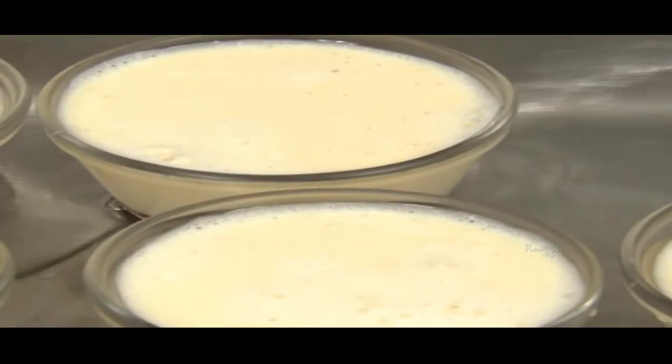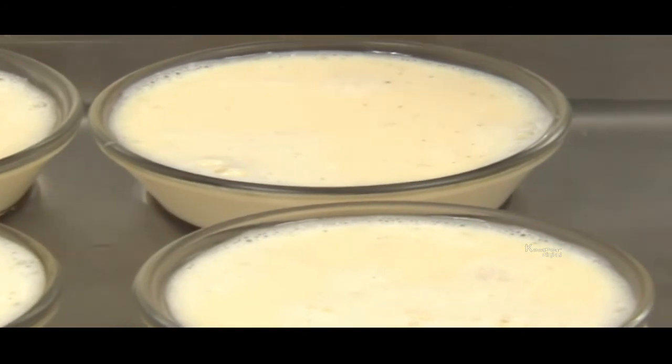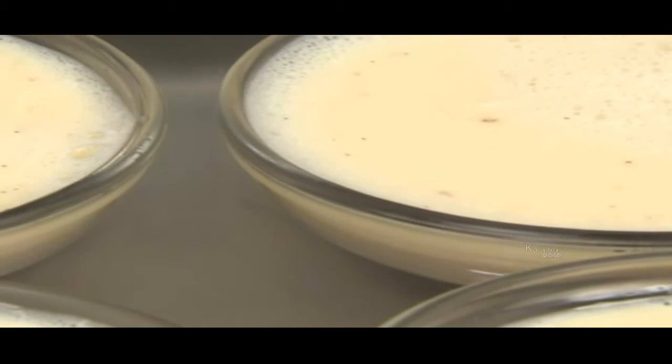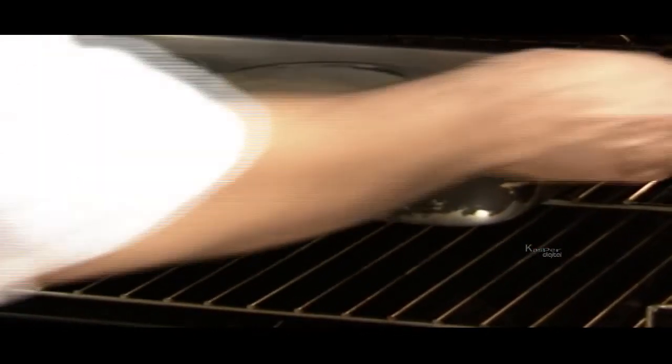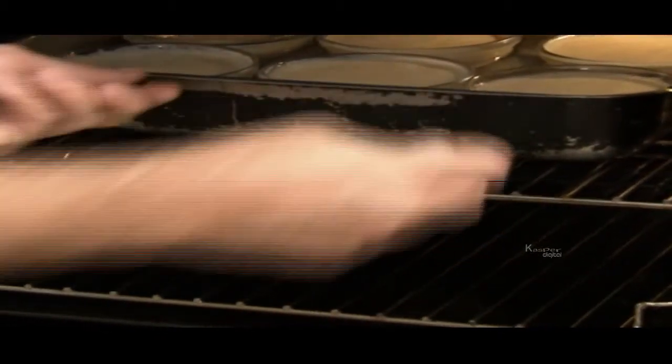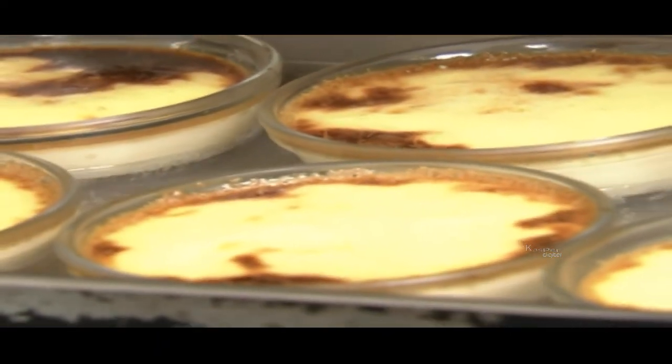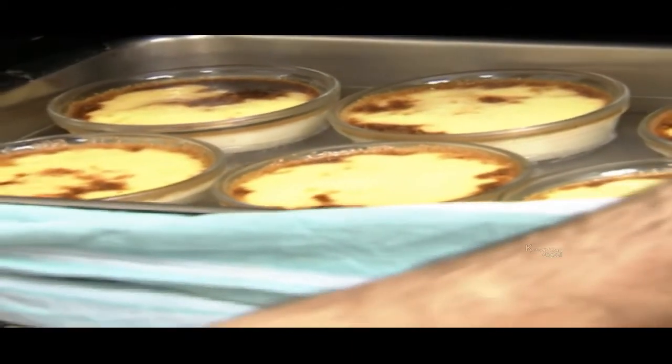You'll notice we have the bowls in a bain-marie. Of course, we will fill this with water to just below the top of the bowls and it will prevent the dessert from burning while cooking. Place the bain-marie in the oven at 180 degrees for about 40 minutes. Carefully take them out of the oven and they should be browning on top. Let them cool then place them in the fridge to set. This usually takes two to three hours.